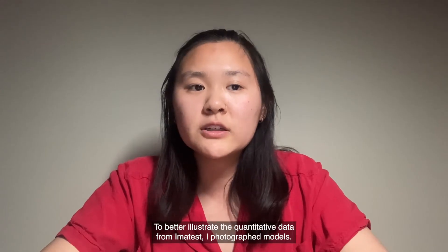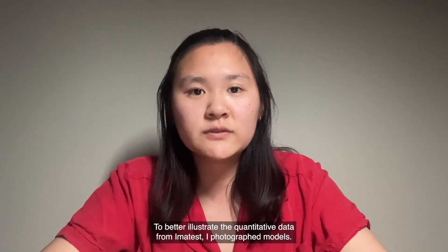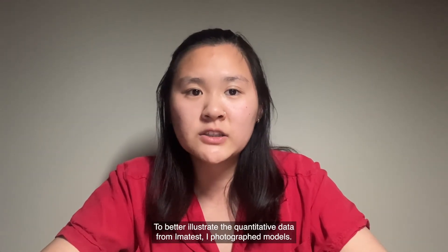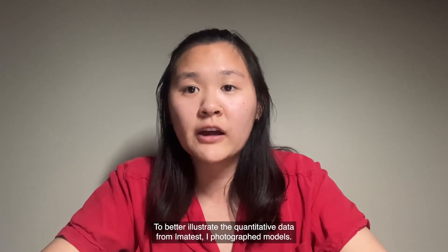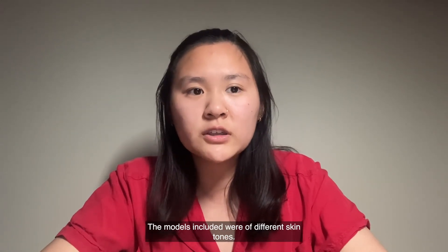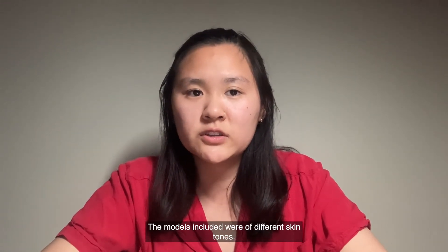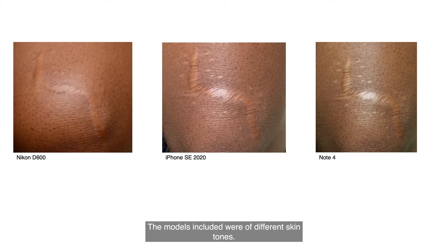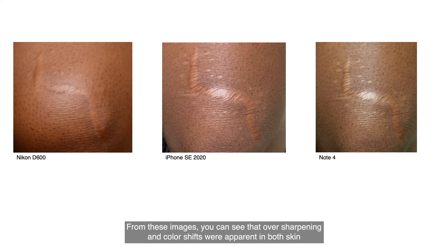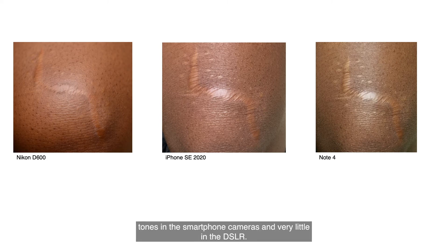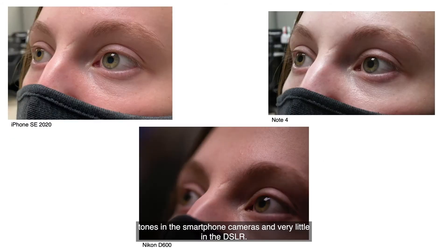To better illustrate the quantitative data from Imatest, I photographed models. The models included were of different skin tones. From these images, you can see that over-sharpening and color shifts were apparent in both skin tones in the smartphone cameras, and very little in the DSLR.